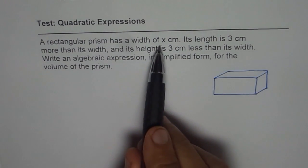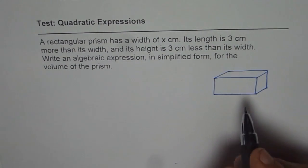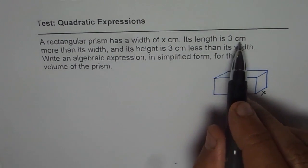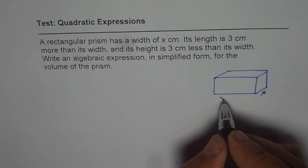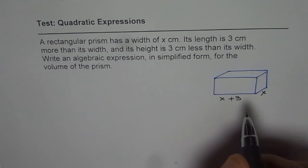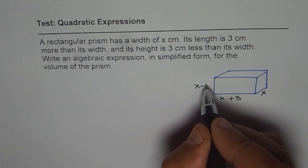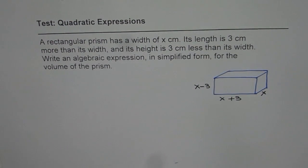Let's say it has a width of x centimeters. So that is the width of x centimeters. Its length is 3 centimeters more, so it is x plus 3 is the length, and its height is 3 centimeters less. So this height is x minus 3. These are the dimensions.